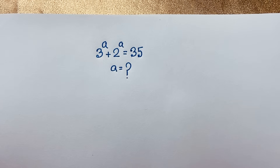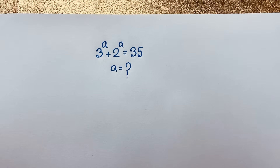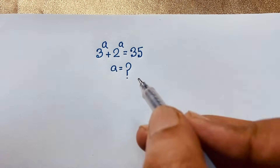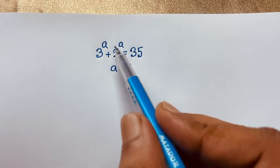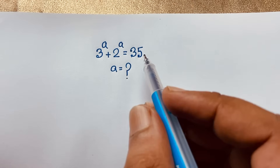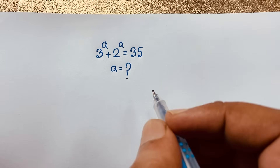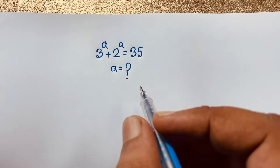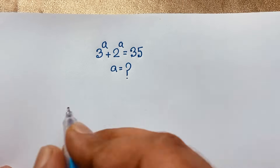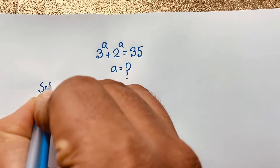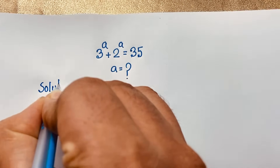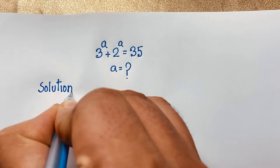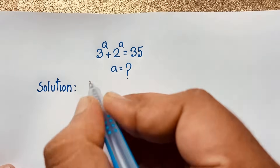Hello everyone, welcome to Russia's Classroom. Today we have solved a nice math olympiad question. This question is: 3 to the power a plus 2 to the power a is equal to 35. We will find out the value of a in this math olympiad question.